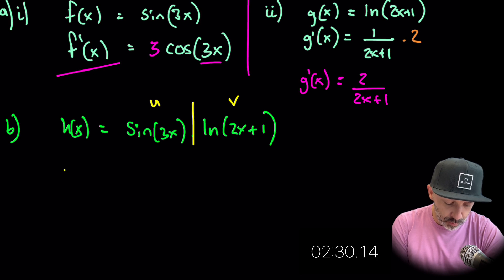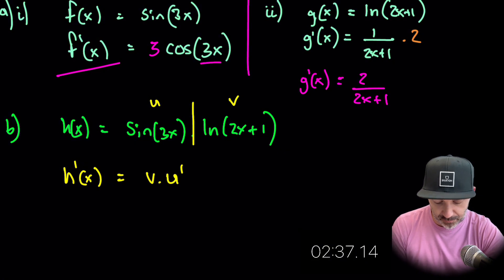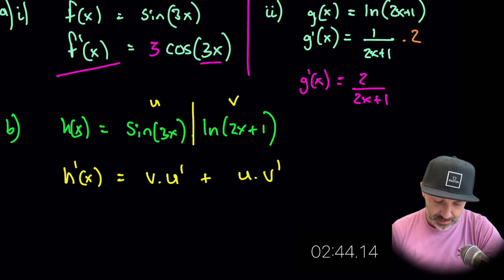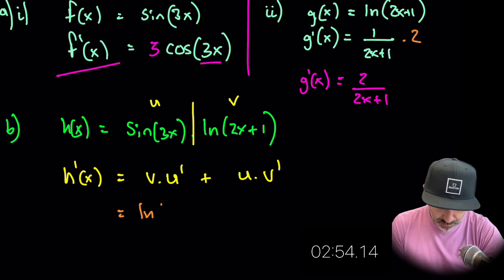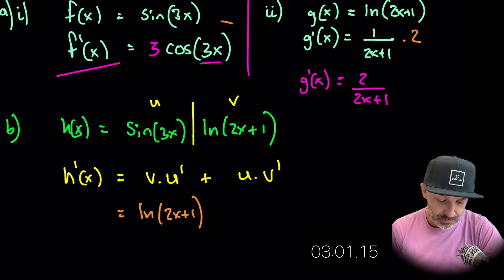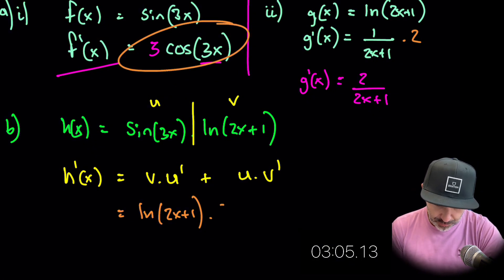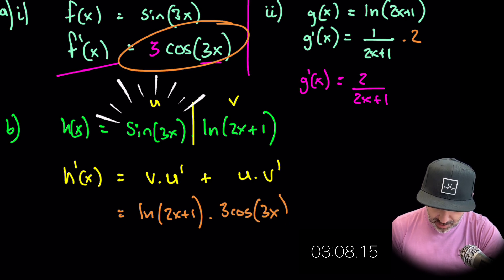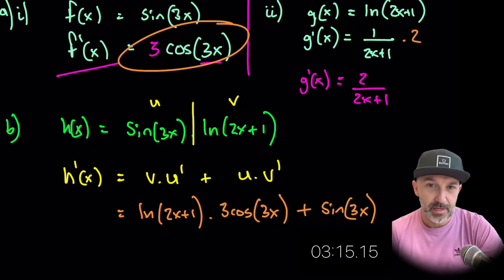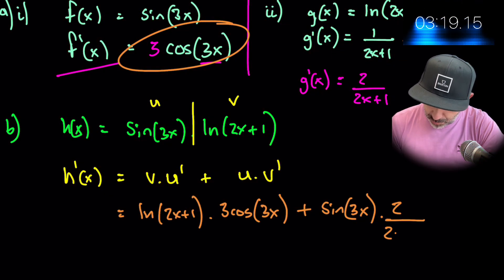Remember the product rule is v times the derivative of u plus u times the derivative of v, that's product rule. Now I actually have everything on the screen here that we can use so I'm just going to go ahead and substitute it in one by one. So v is going to be natural log 2x plus 1, du will be the derivative of sine 3x. Now we did that in part a so that's this one here so that'll be 3 cos 3x plus u which is now still just sine 3x and the derivative of v was the derivative of the natural log which was 2 over 2x plus 1.